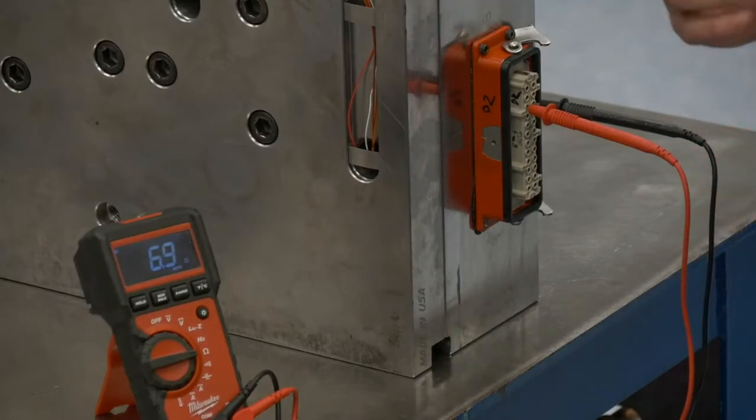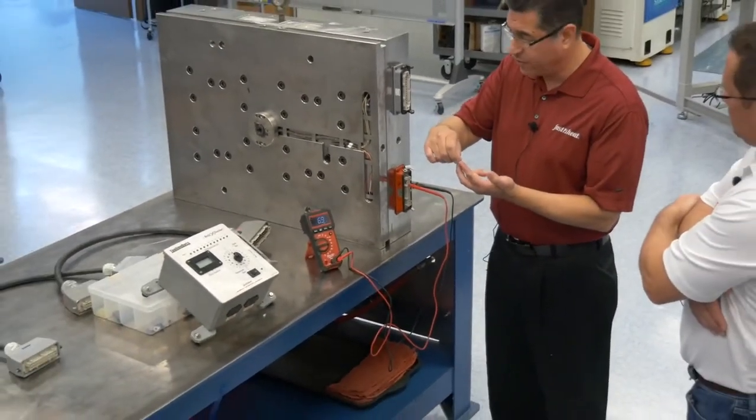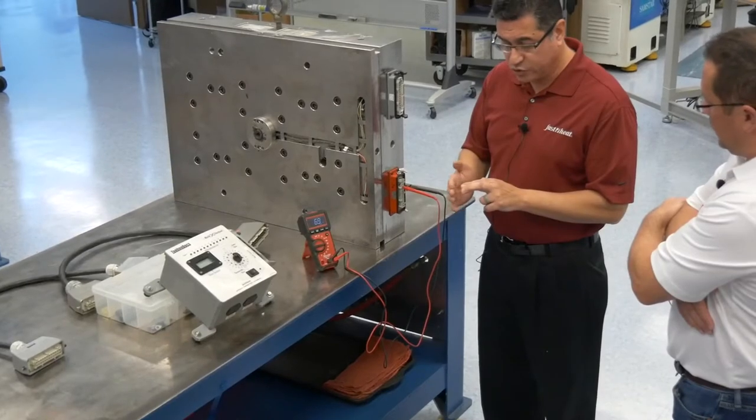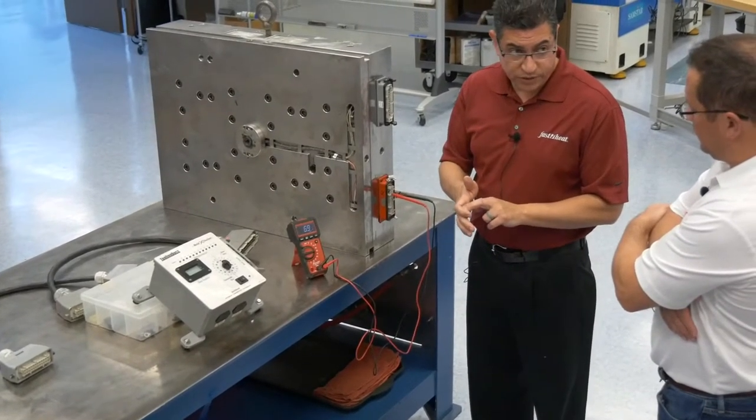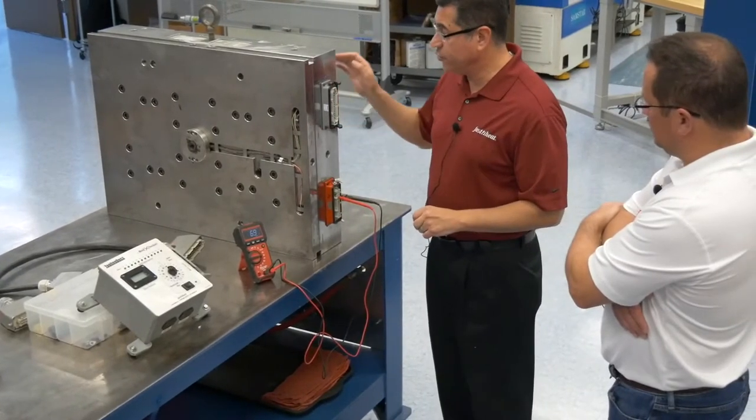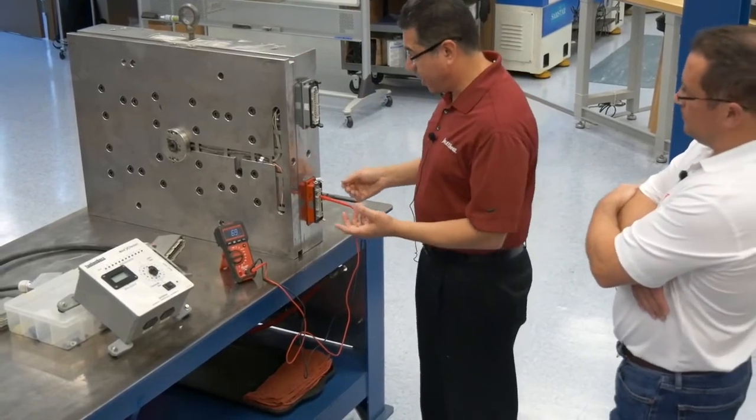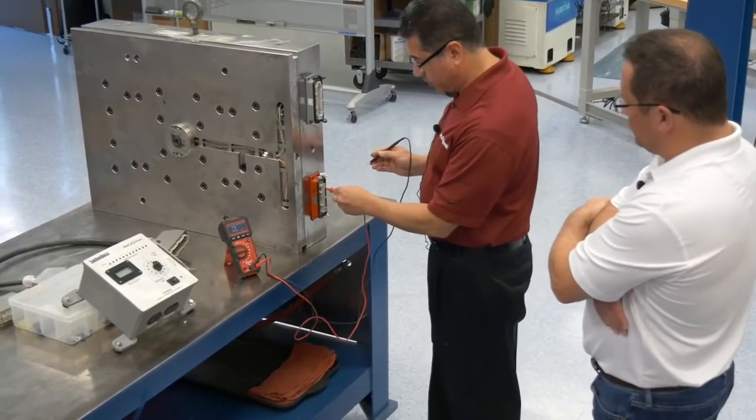Grounded thermocouple, both of the leads, because it's a type J thermocouple, the iron versus copper and nickel. They twist those leads together and it's actually grounded to the sheath of the thermocouple. The sheath is actually touching the heater. The heater is touching the body here. So on a grounded thermocouple, everything is grounded together.